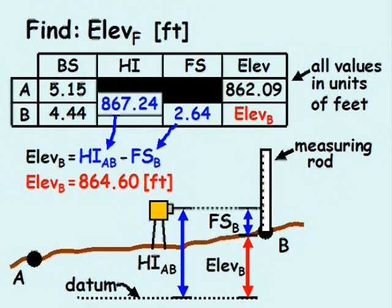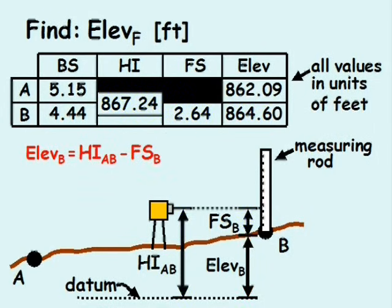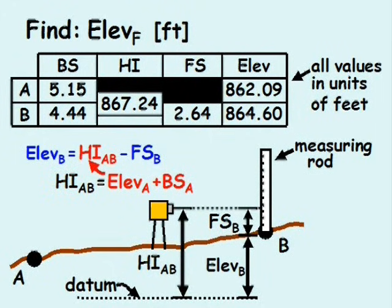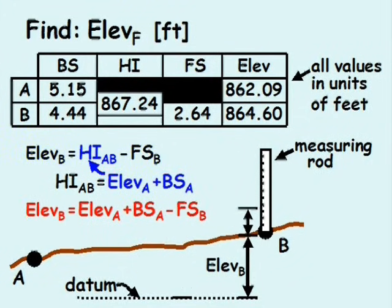Looking over our equations, the elevation at point B equals the height of the instrument minus the foresight reading. But previously, we already solved for the height of the instrument as the elevation at point A plus the back sight reading to point A. Substituting in the height of the instrument, we can equate the elevation of point B to the elevation at point A plus the back sight to point A minus the foresight to point B.